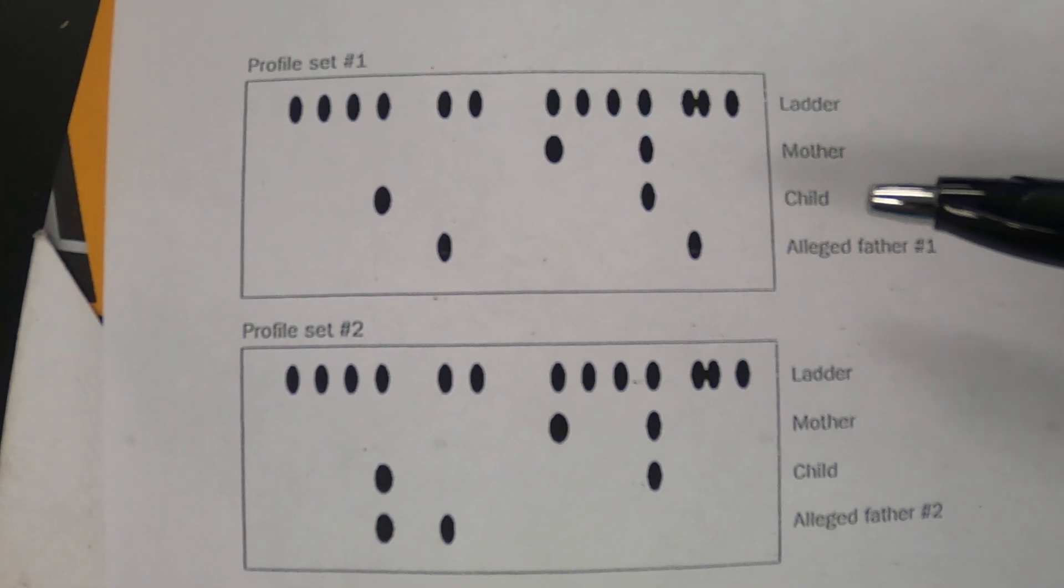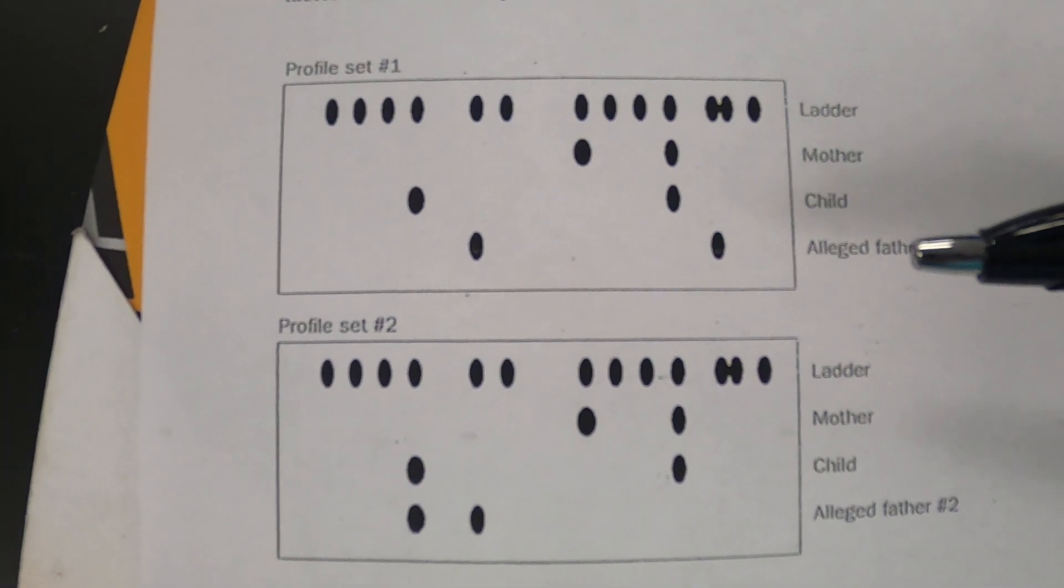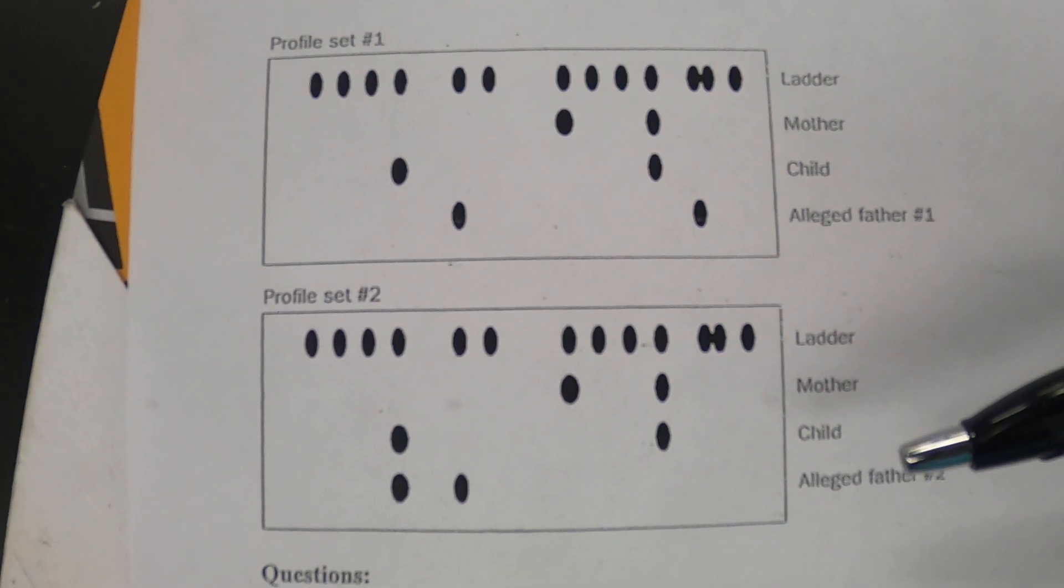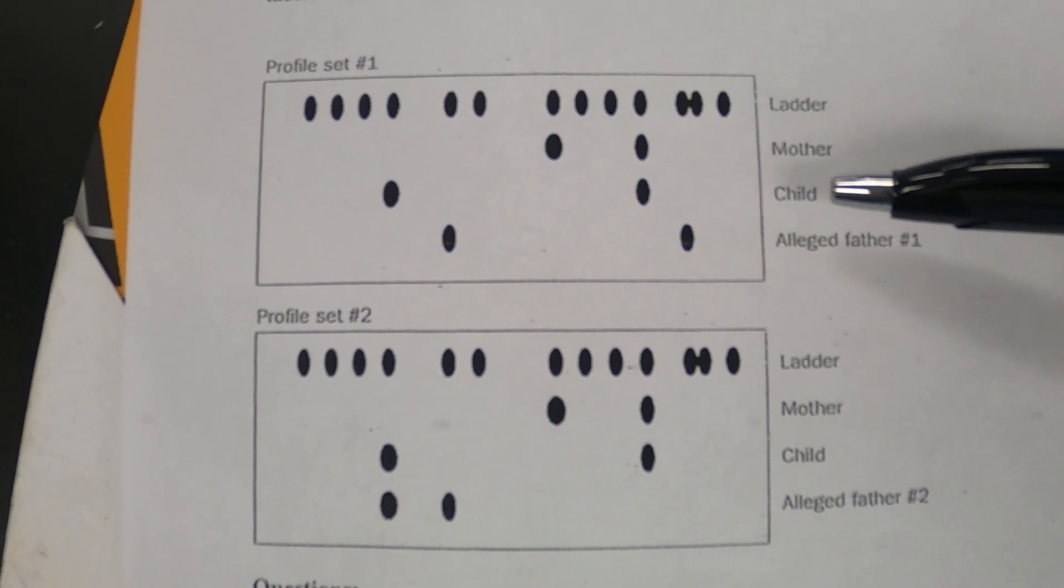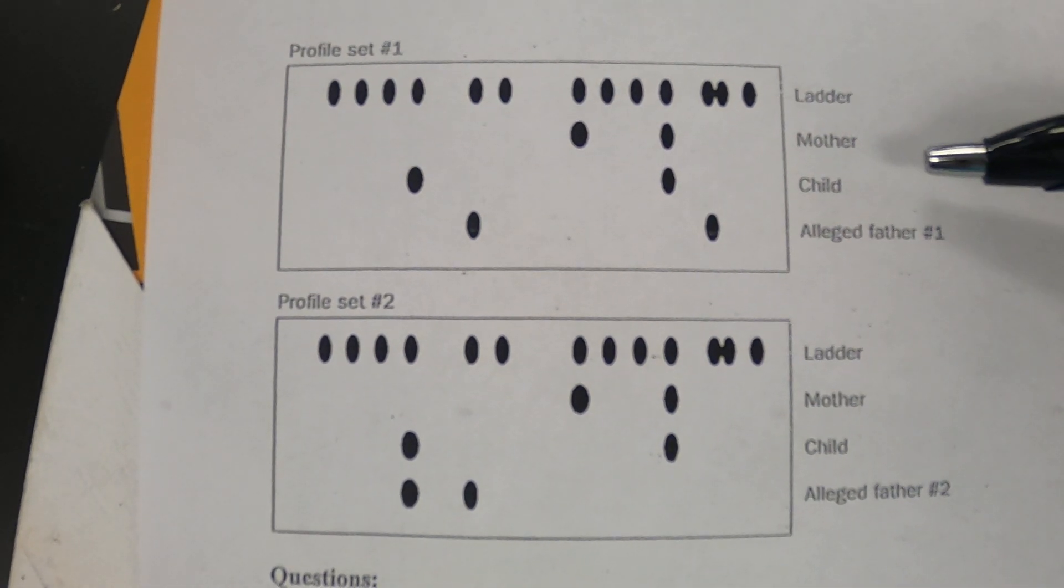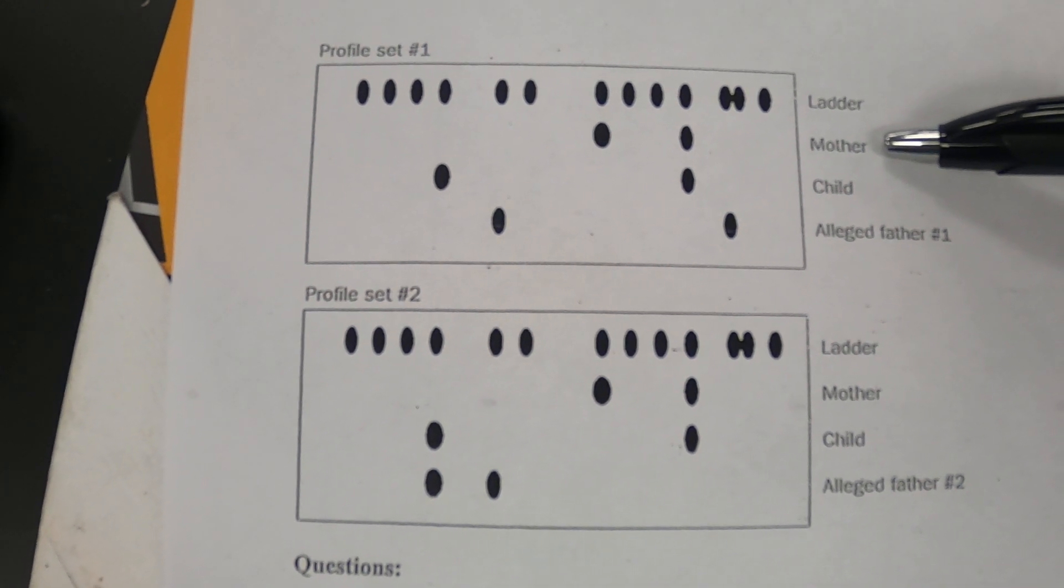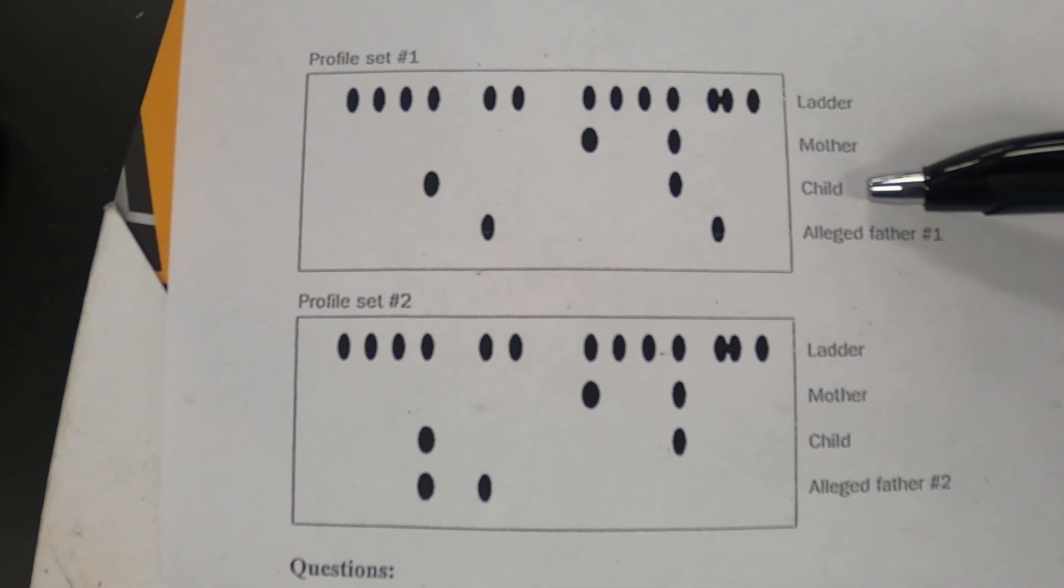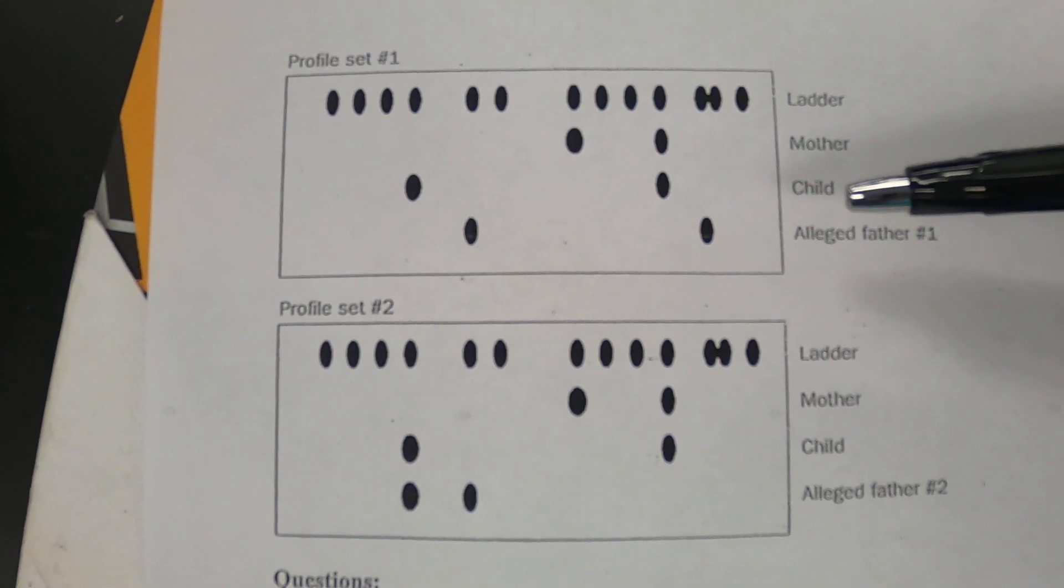Now in a court of law it's going to take lots of tests, it's going to take like six to eight tests to prove it. But you are going to have to use the same probe in here. If I use probe, say for example CGAT on the father and I use ATT on the mother and CGAT on the child, then we are going to be like comparing apples and oranges and we'll never see any similarities.